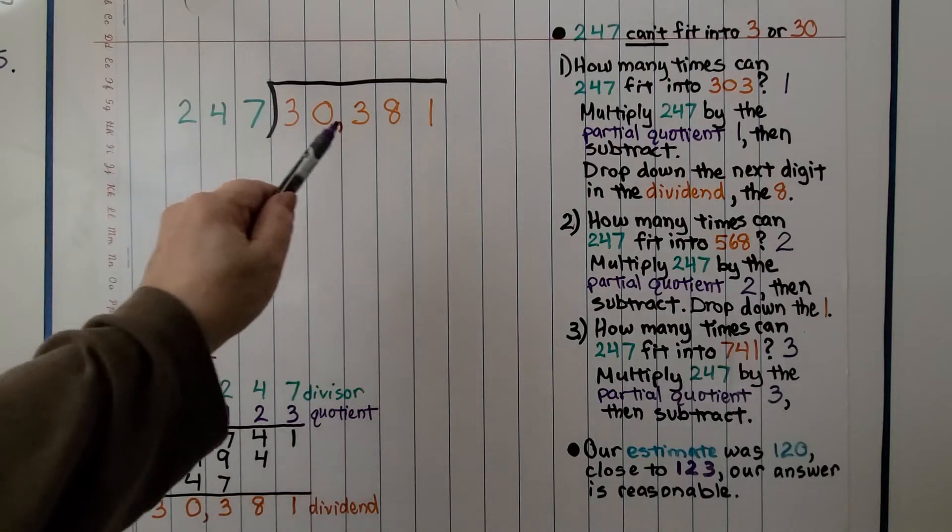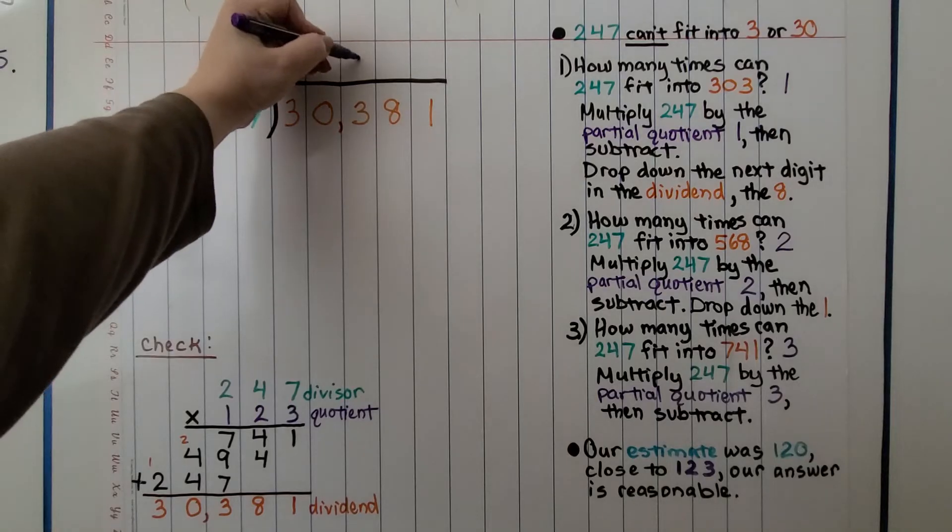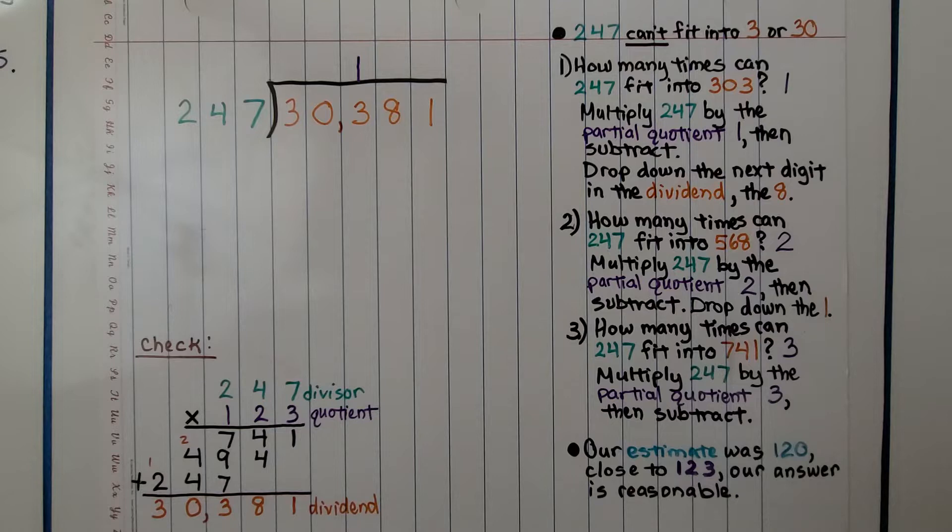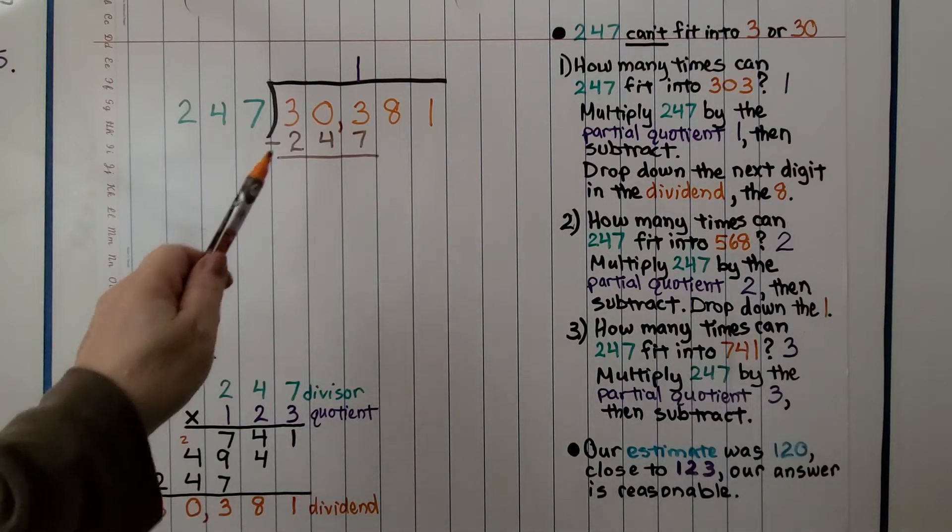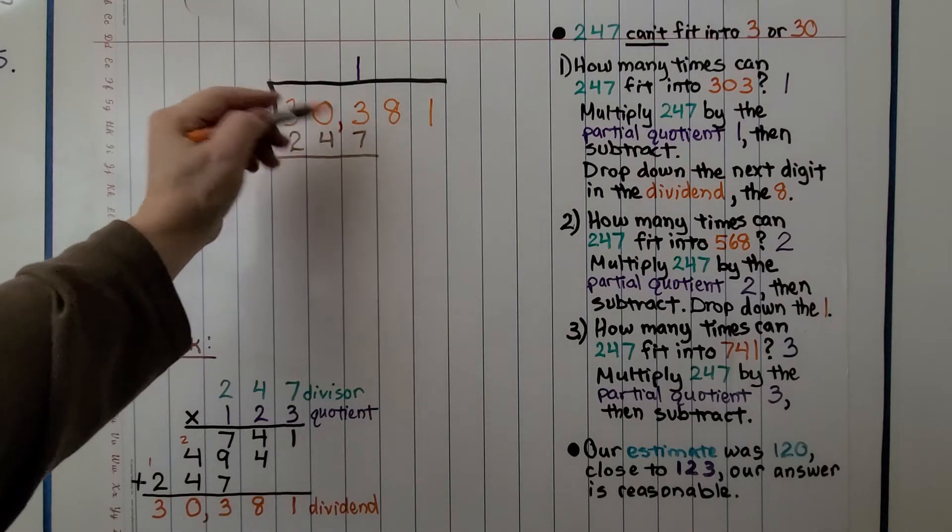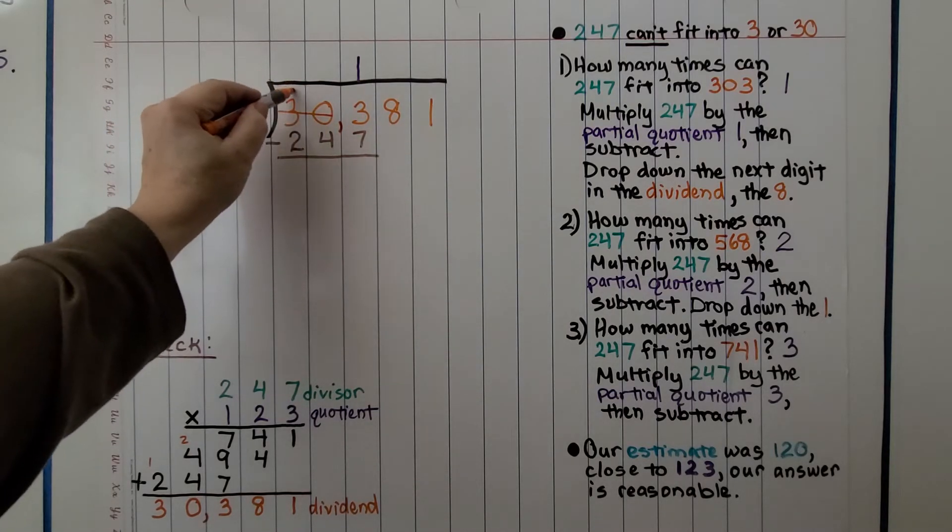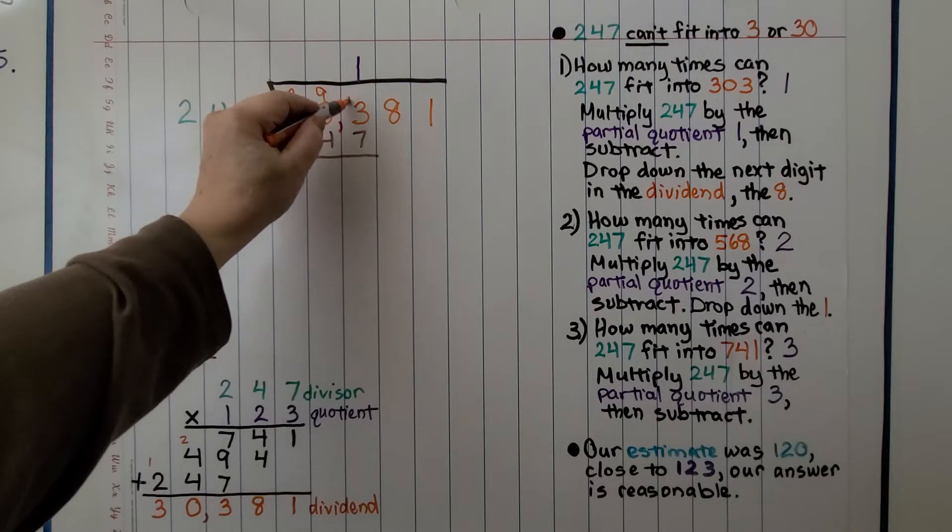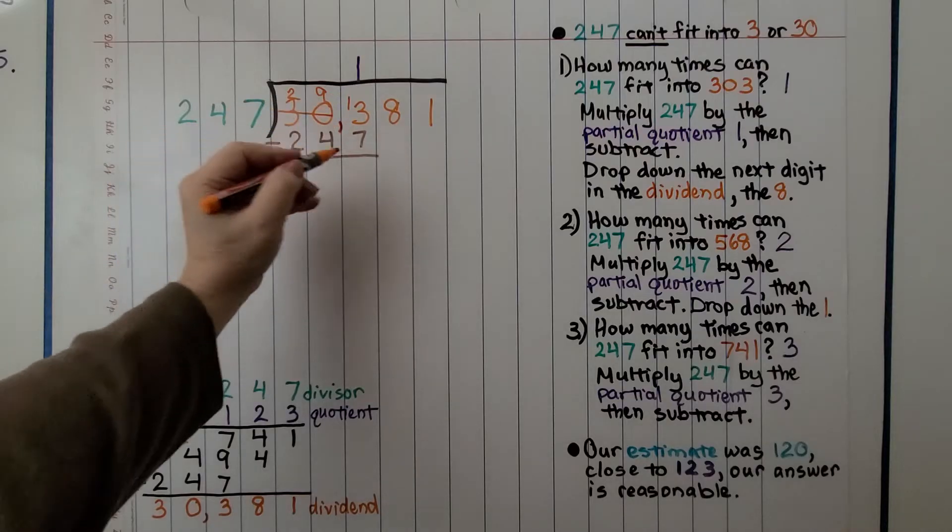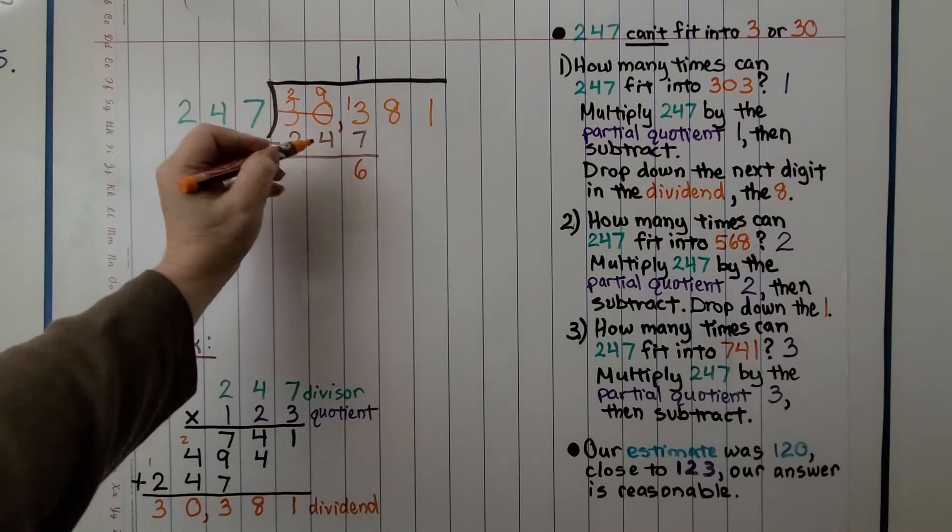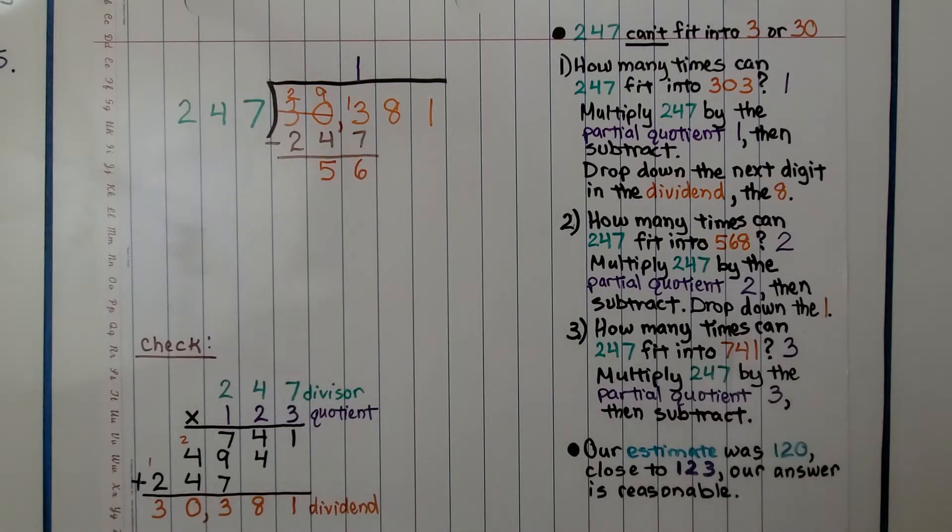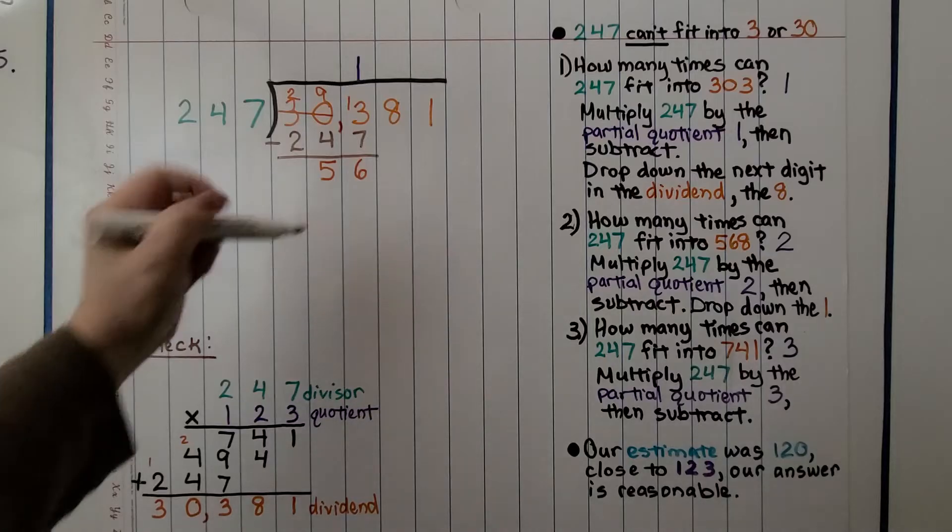But 247 can fit into 303 one time. 247 times 1 is 247. We write that below the 303, and now we subtract. We rename this as a 2 and a 9, and give a 10 to the 1's place. Now we have 13 minus 7, which is 6, 9 minus 4, which is 5, and 2 minus 2. And now it's the 8's turn to come down.